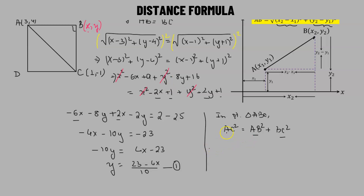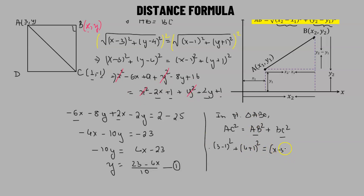Since we are computing AC squared directly, AC² equals (3 minus 1)² plus (4 minus (-1))² which is (3 minus 1) squared plus (4 plus 1) squared. This equals AB² plus BC², so: (3 minus 1)² + (4 plus 1)² equals (X minus 3)² plus (Y minus 4)² plus (X minus 1)² plus (Y plus 1)².